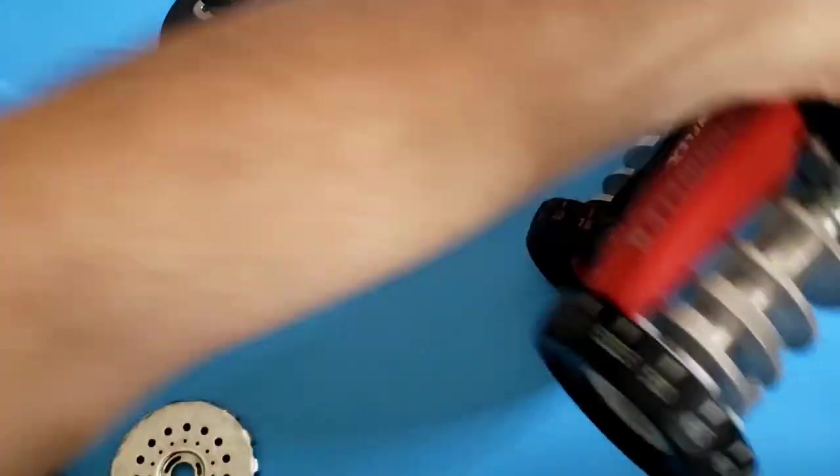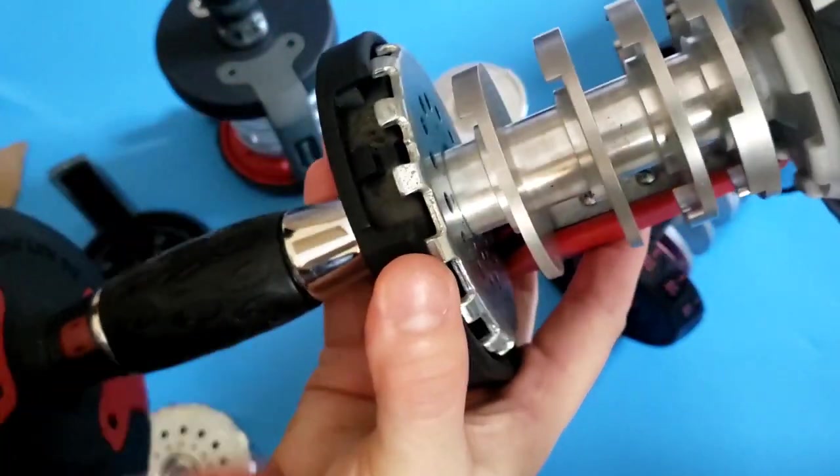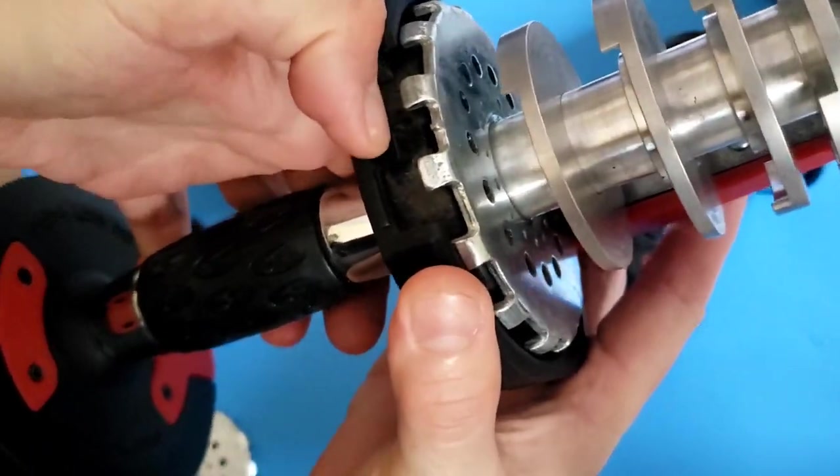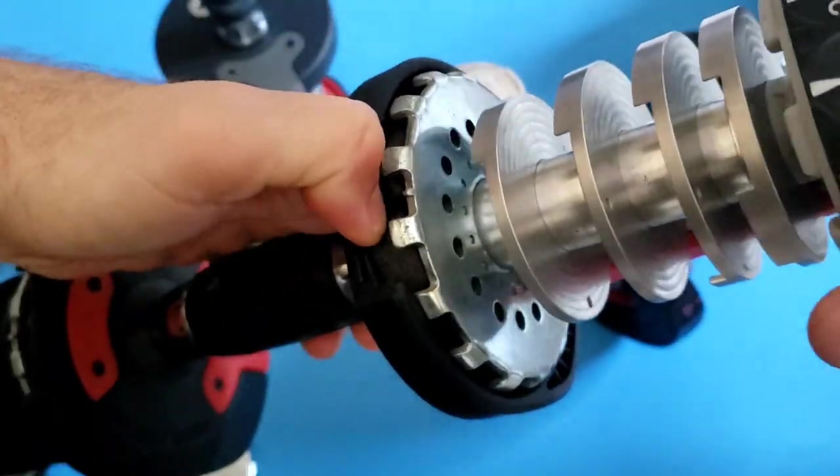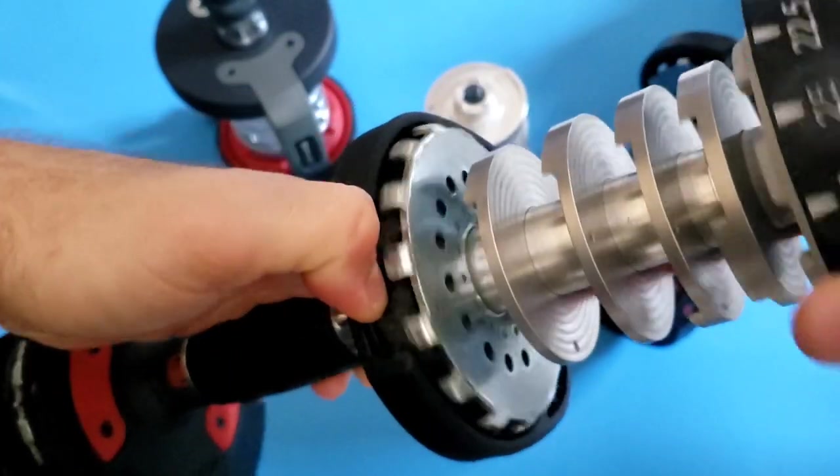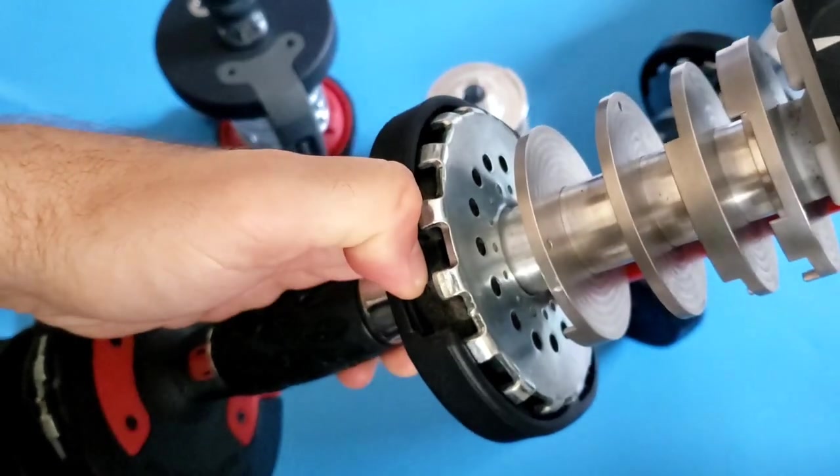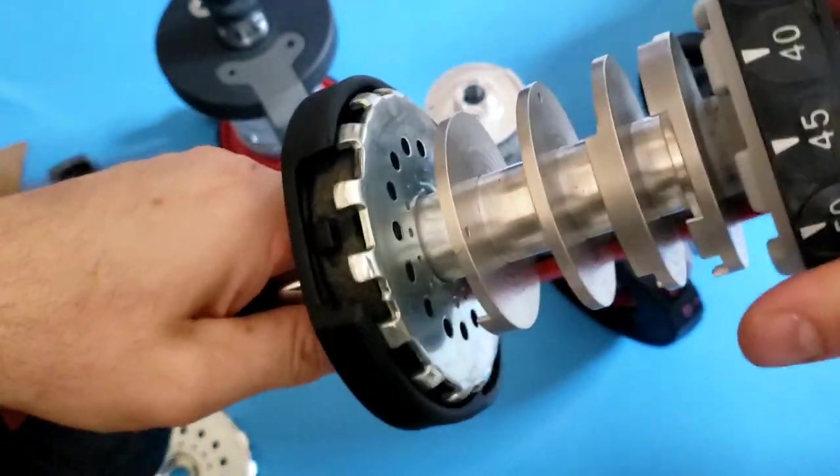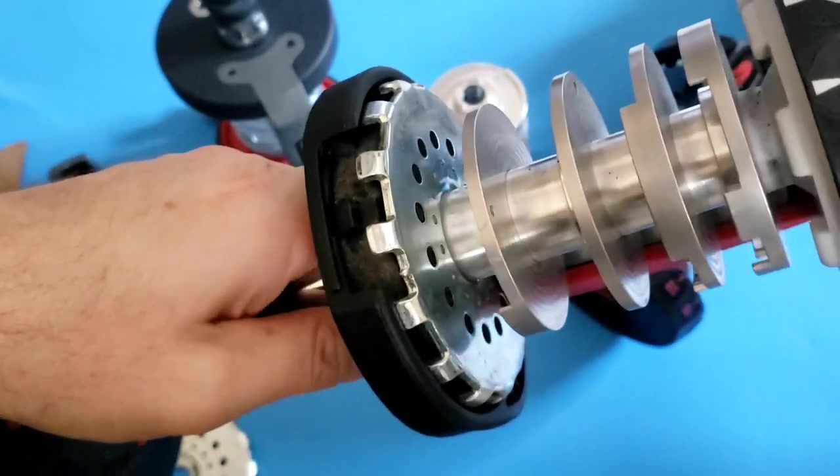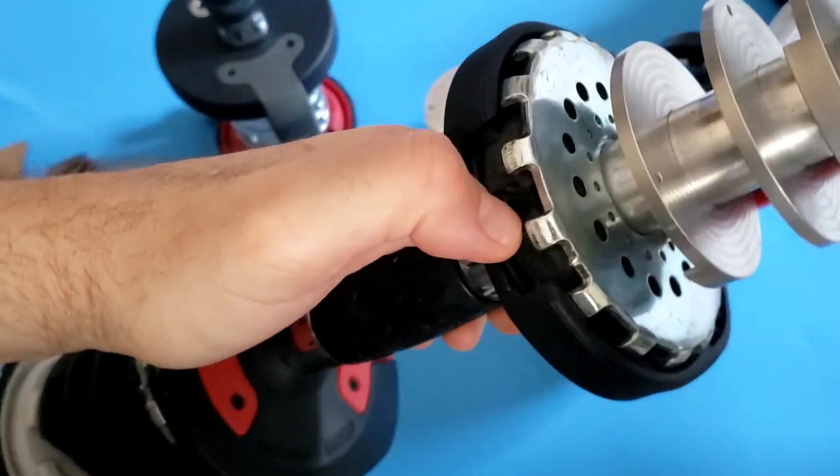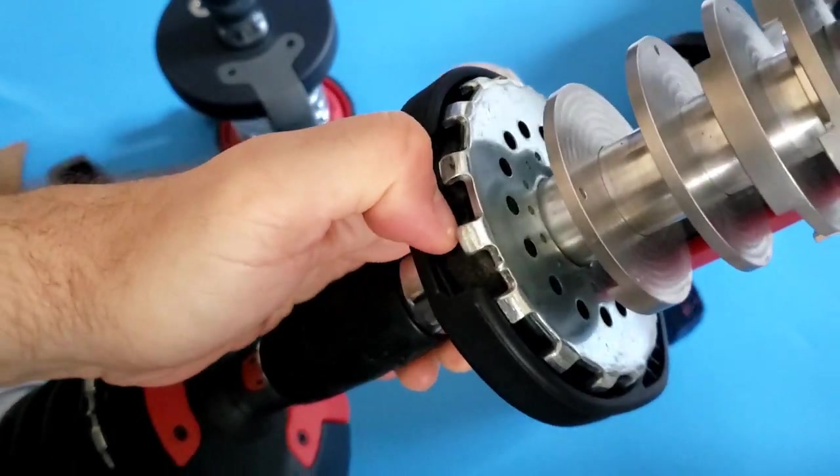And what I tell people is reach your finger in here while the dumbbell is assembled. Okay, let's take the 552 for example. You can reach your finger in here and depress that pin, and you can see it freely rotates. Now when I release it, it cannot rotate.